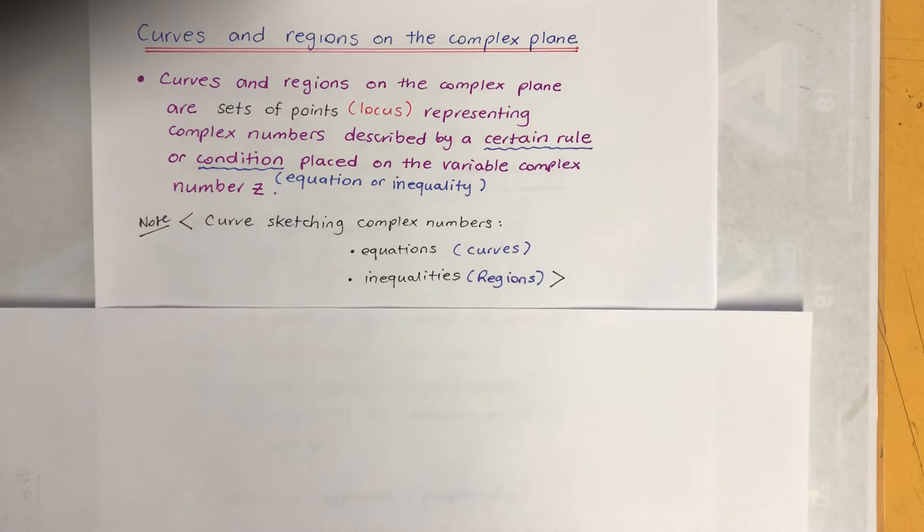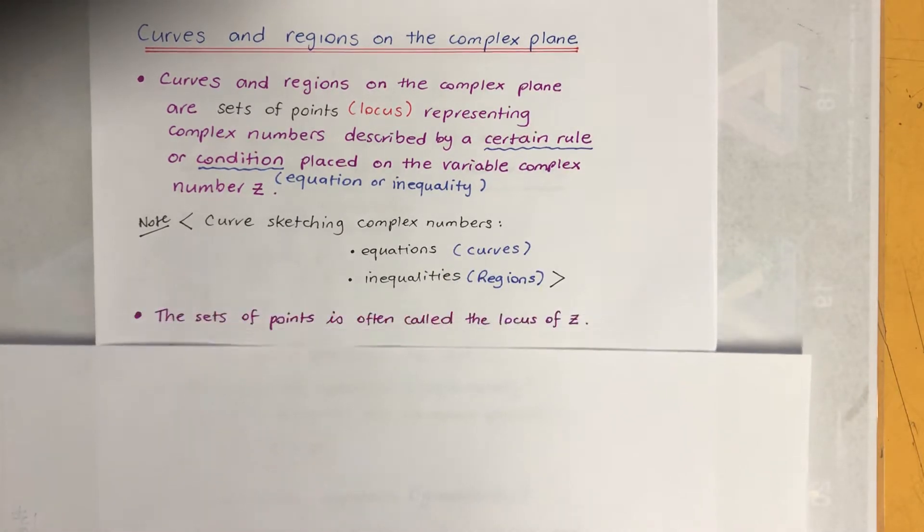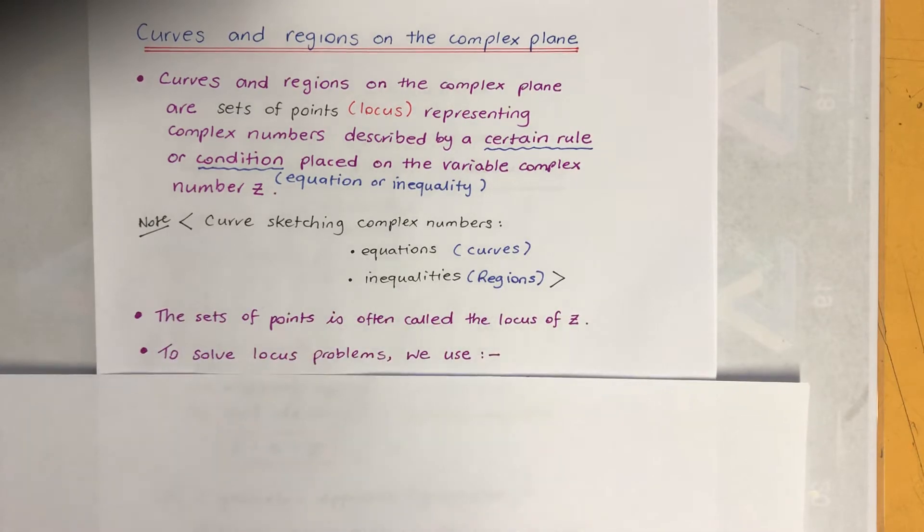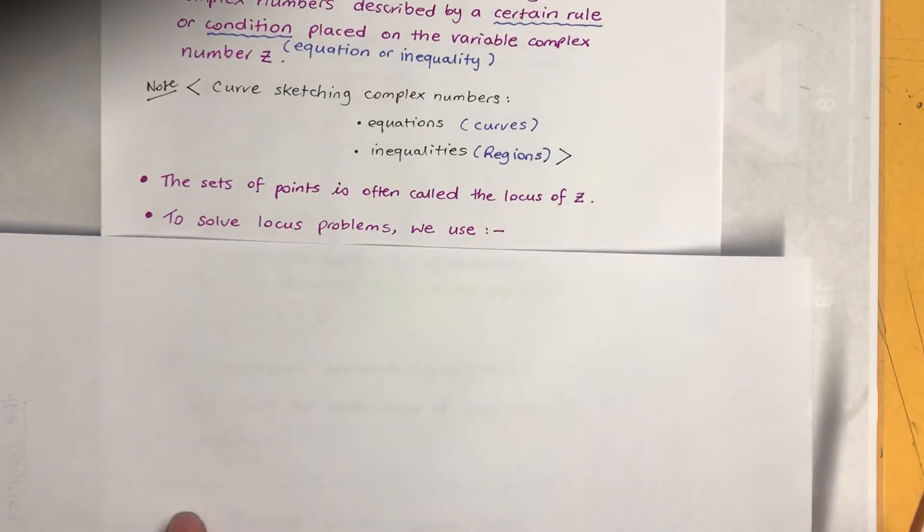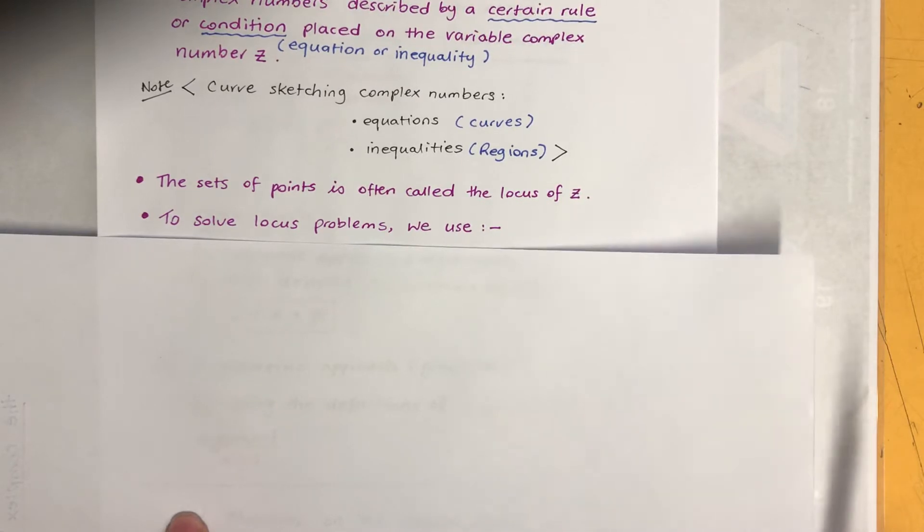So basically we're just doing curve sketching with complex numbers. Now the set of points is often called the locus of Z, and that's what we just have to find. If they find the locus, that means just find the equation.